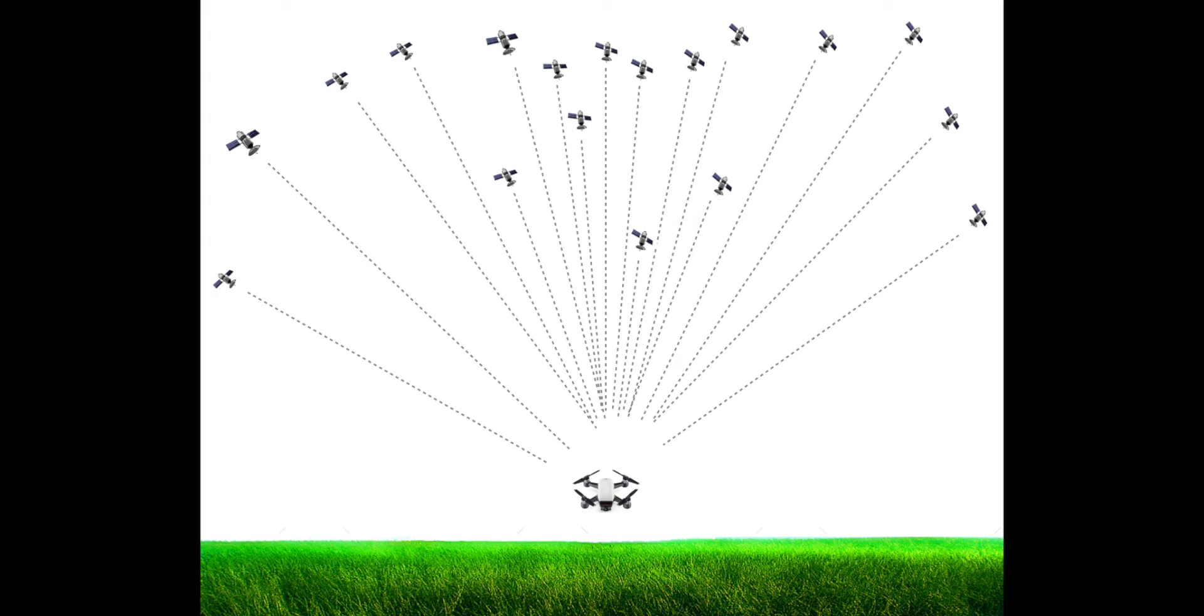What actually is most important is how separate those satellites are in the sky and that is a calculation known as HDOP or horizontal degrees of precision. This is how accurate the GPS data the aircraft is receiving is. If we were to look closer you would see that the reality is in this scenario the aircraft is taking its GPS data from these satellites listed in red.